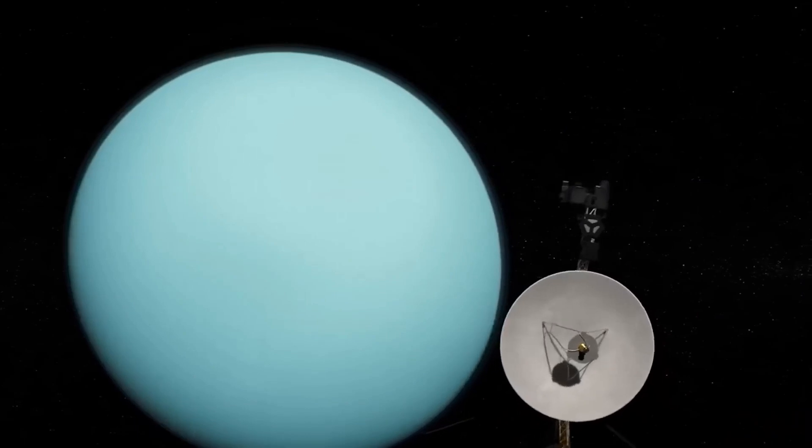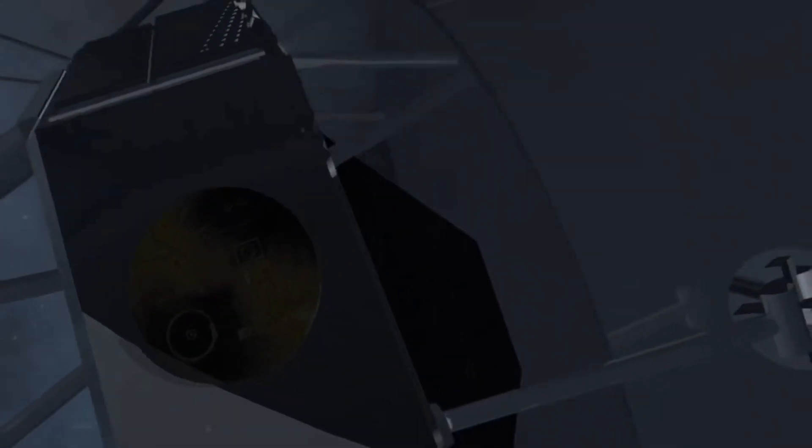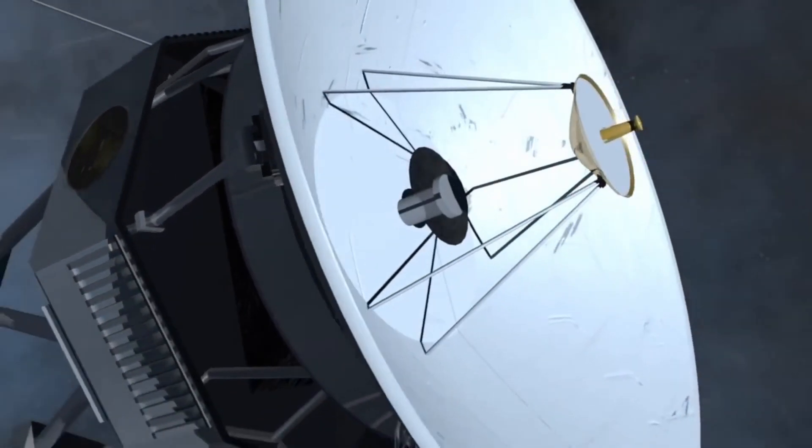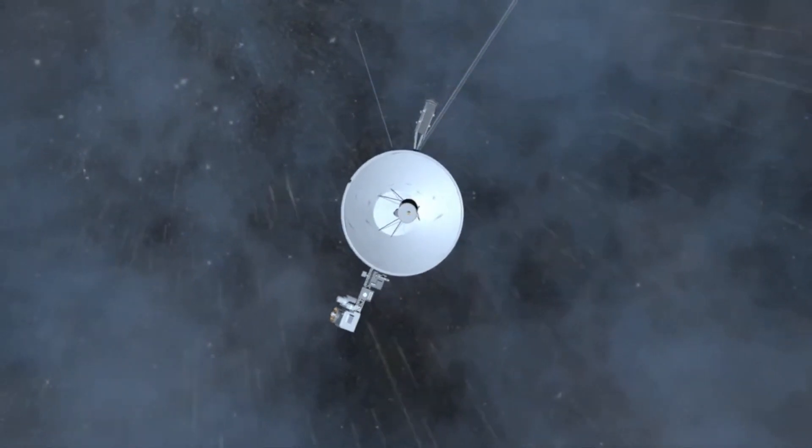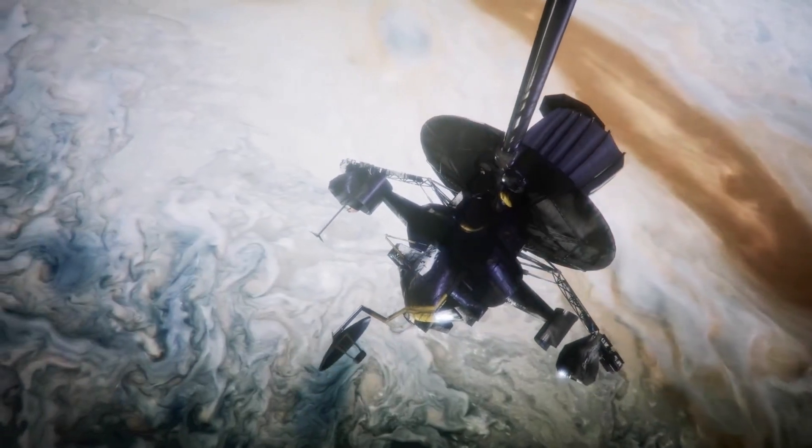Even though Voyager 2 was the first to launch from Earth, the route it took meant it would be second in the race to reach the heliosphere. The mission scope was to study the outer part of the solar system and gain knowledge about the outer planets and their moons.